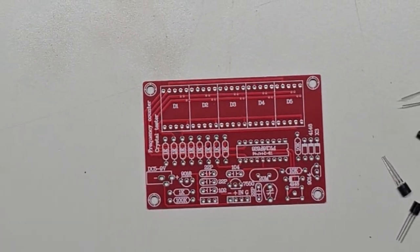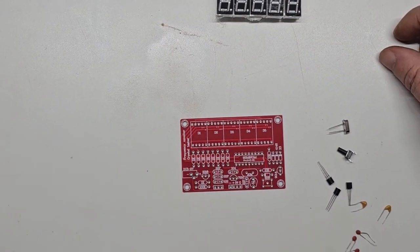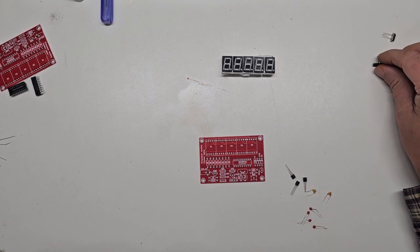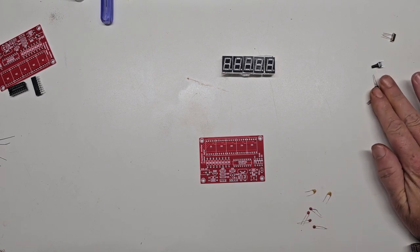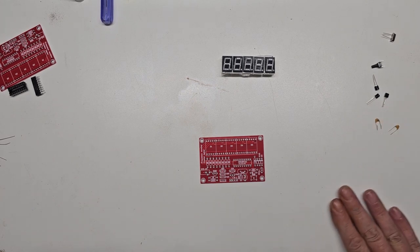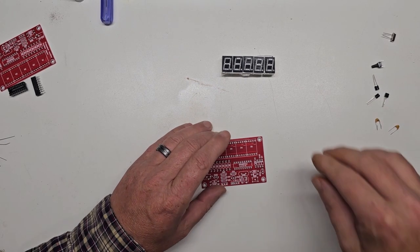You can see the PCB has every component location marked. A good way to proceed is to start with mounting the smallest components first then work your way up in size. Since this is a small board you can also start with the most complex to solder and work your way across the board.